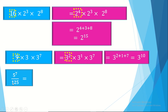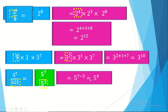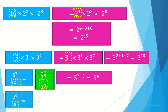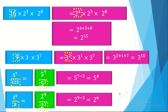Similarly for division with different bases: 5 to the power 7 over 125 — replace 125 with 5 cubed. Same base divided, subtract powers: 5 to the power 7 minus 3 equals 5 to the power 4. Also, 2 to the power 9 over 8 — replace 8 with 2 cubed. Same base divided, subtract powers: 2 to the power 9 minus 3 equals 2 to the power 6.